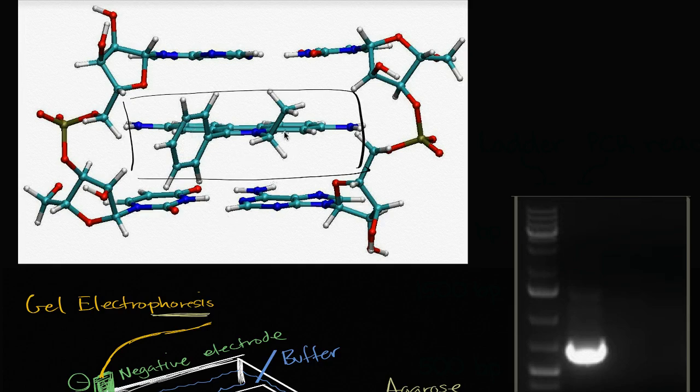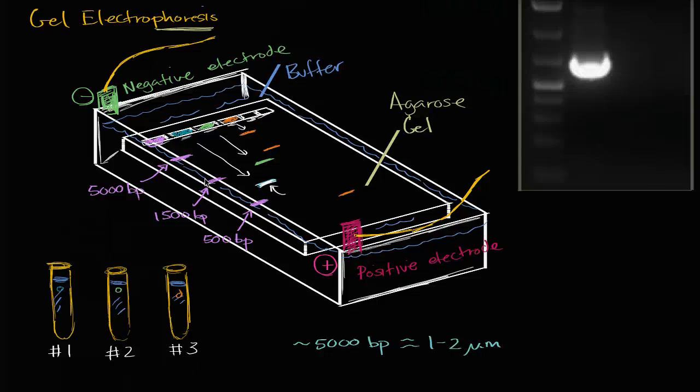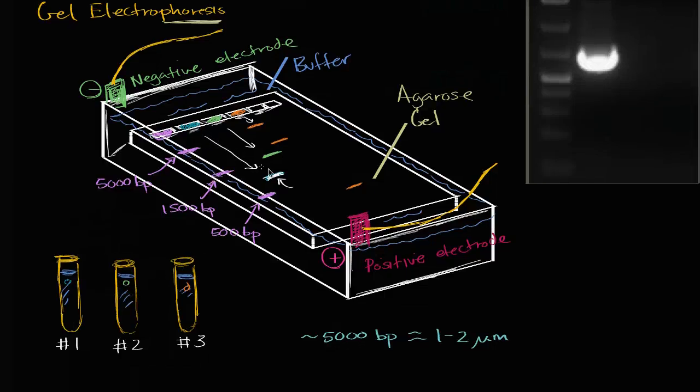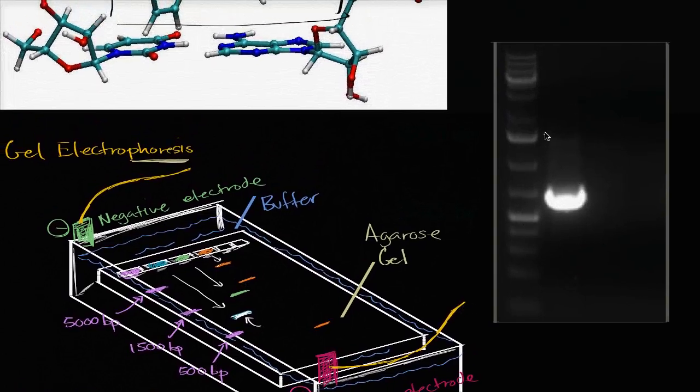So if you put this ethidium bromide into all of your DNA right over here, and then as it migrates, and then if you turn on a UV light, it would become fluorescent. And you would actually see these things. And so if you wanted to see what it actually would look like in real life, well this is what it would look like if you were to look at it straight on.